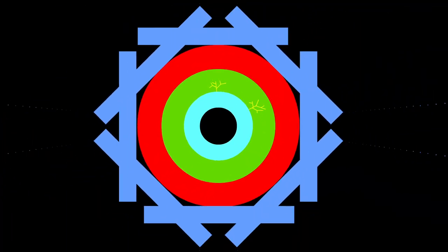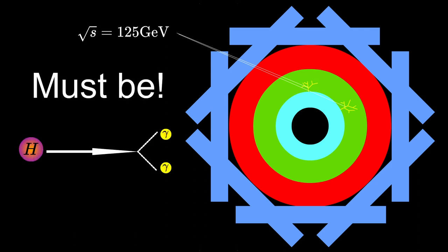Anyway, now if we detect two photons in the detector, and since we can measure their energy, we can calculate their invariant mass. And if we get the number of 125 GeV, we have the Higgs, right?